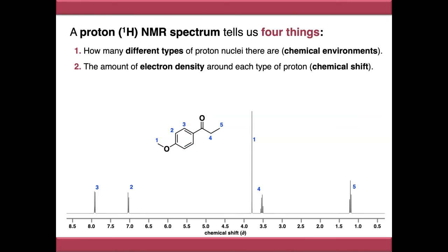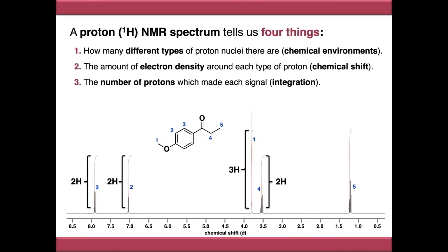The third piece of data a proton NMR spectrum can tell us is the number of protons which went into making each signal and this is called integration or the integrated trace so you'll see this overlaid on top of the spectrum usually like this as s-curves in a different color and the ratio of the heights of the s-curves tells you how many protons went into making each signal. So you can see from these ones that it's a two to two to three to two to three ratio so you can use this in helping you identify which signals come from which chemical environments.